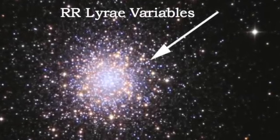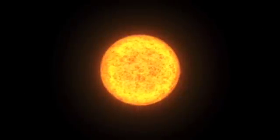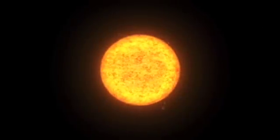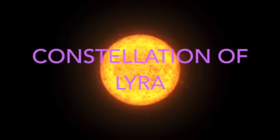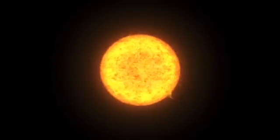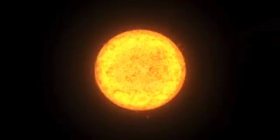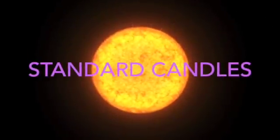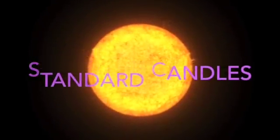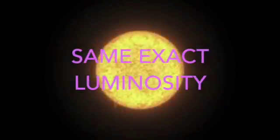RR Lyra variables. These variables are named after the star RR Lyra in the constellation of Lyra. These variable stars happen to be very important due to the fact that they are the brightest in their class. These stars are periodic variables that are commonly used as standard candles to measure galactic distances. They are usually found in globular clusters and all have the same exact luminosities, which makes it useful for finding distances.